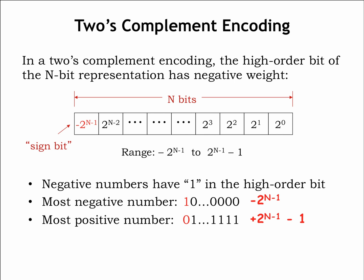For example, in an 8-bit 2's complement representation, the most negative number is minus 2 to the 7th, which is negative 128, and the most positive number is 2 to the 7th minus 1, or 127.